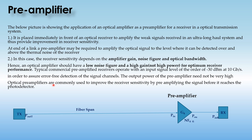In order to assure error-free detection of the signal channel, the output power of the preamplifier need not be very high. Optical preamplifiers are commonly used to improve receiver sensitivity by pre-amplifying the signals before they reach the photodetector. The prime requirements are high gain and low noise figure.